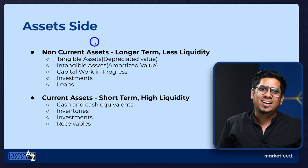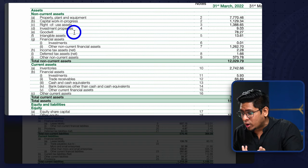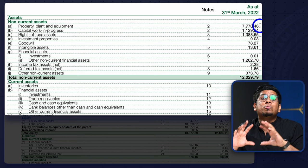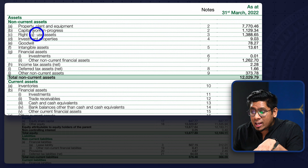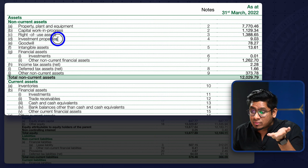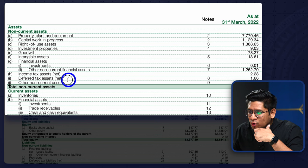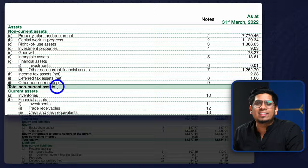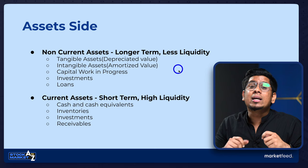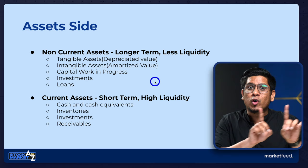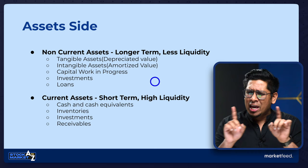Let's look at DMART's non-current assets. Property, plant and equipment: DMART has 7,770 crores there — these cannot easily be liquidated. Then capital work in progress, investment properties, goodwill as an intangible asset, other intangible assets, financial assets and investments, and a few other non-current assets — all put together give the total non-current assets. One important concept: when a company shows tangible assets on the balance sheet, the depreciated value is shown. When they show intangible assets, their amortized value is shown.